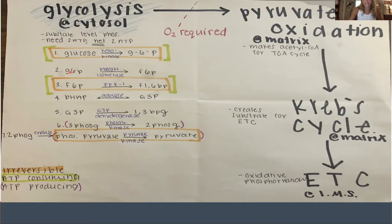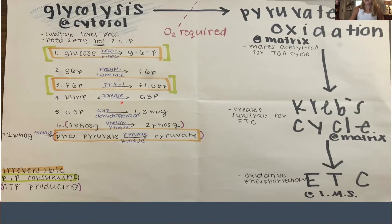An isomerase just changes the structure, so it goes from glucose to fructose — that makes sense. A kinase means you're adding a phosphate. Aldolase is essentially a fancy name for an isomerase, so you're just changing the structure.